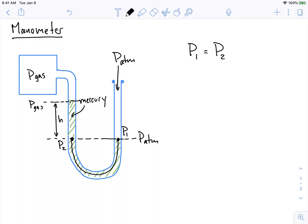But we also know the pressure at these points from different methods. I know that P1 is actually just atmospheric pressure. So that's what's acting there.